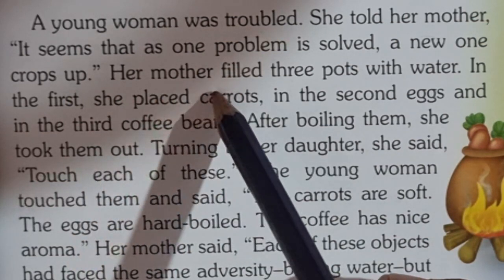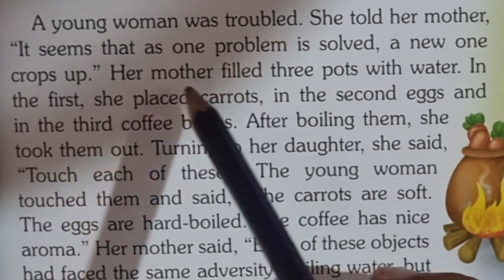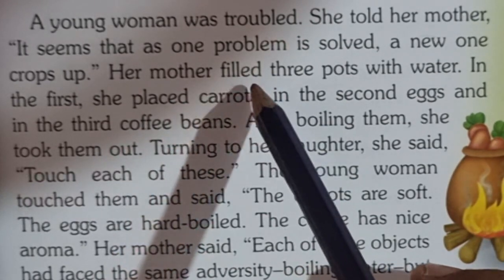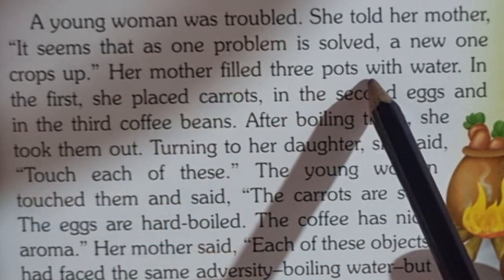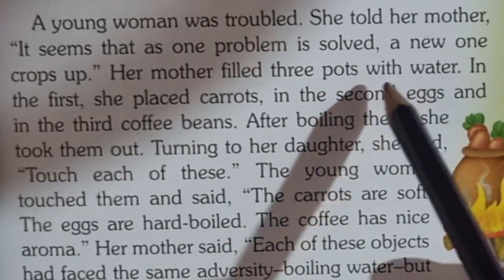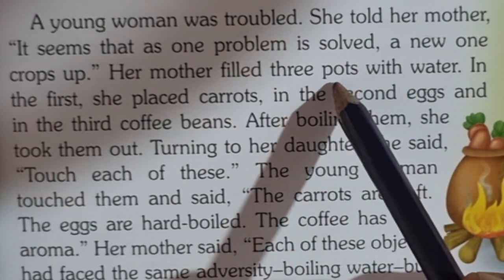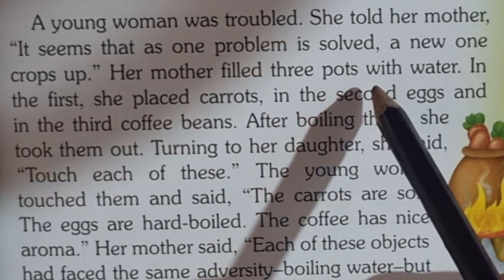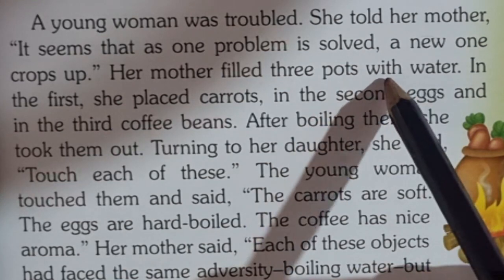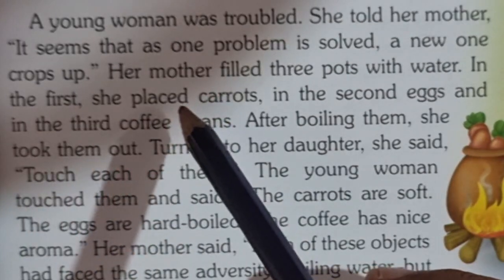In this sentence — 'her mother filled three pots with water' — there is no auxiliary verb. The main verb is 'filled.' She placed carrots, so there is no auxiliary verb; the verb is 'filled.'